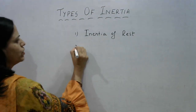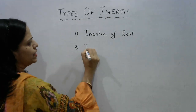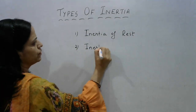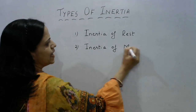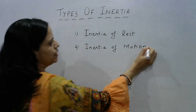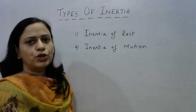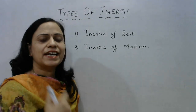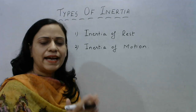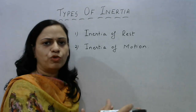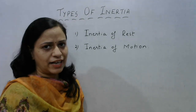Now let us talk about the second type of inertia — inertia of motion. When we say inertia of motion, it is the tendency of an object to resist a change in its state of motion. That means when an object is moving, it tends to keep on moving, provided no external force is acting on it.